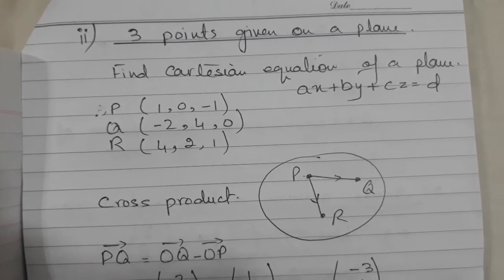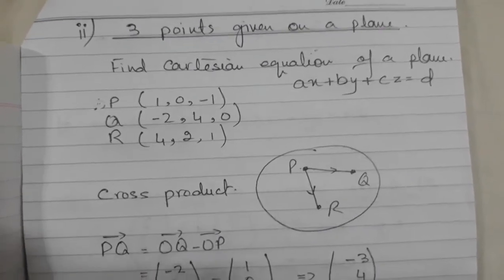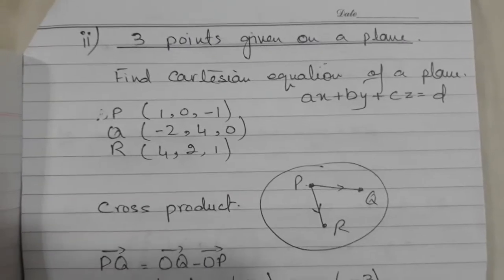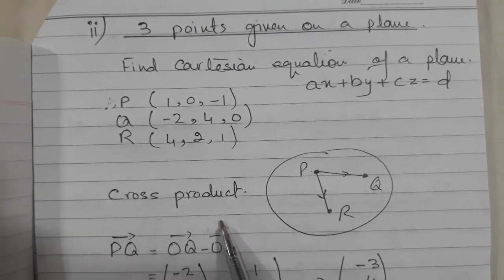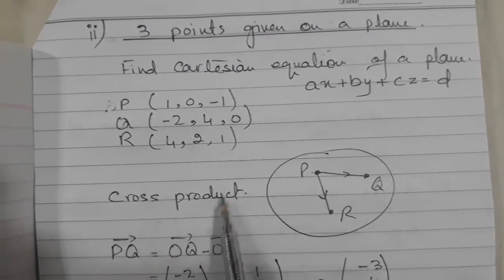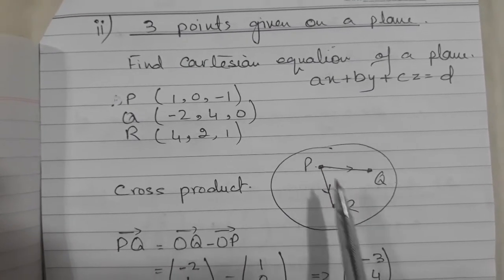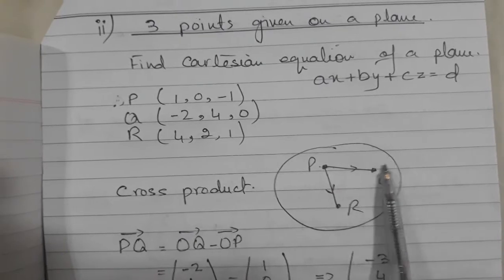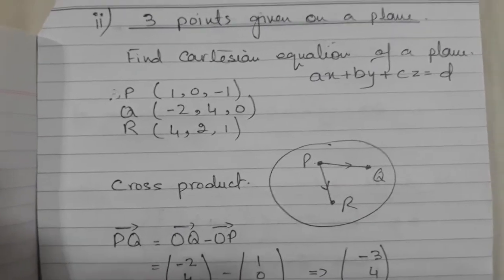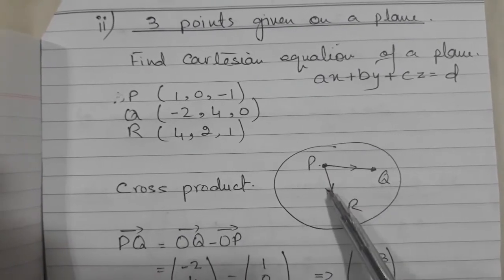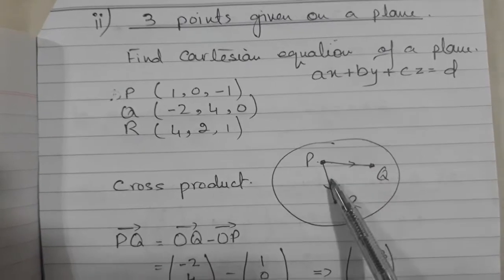And the second thing is we need to know the normal vector of the plane. Now, normal vector we don't have here. Now, there is a concept of cross product you need to understand. The cross product is applied on two vectors, for example, vector PR and PQ. You can take QR also, whatever you like. Two vectors which are on the same plane but not parallel. These are not parallel.